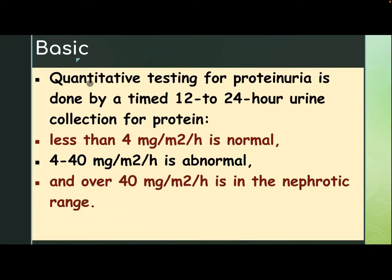Quantitative testing for proteinuria is done by timed 12 to 24 hour urine collection for protein. Less than 4 mg per cubic meter per hour is normal, 4 to 40 mg is abnormal, and over 40 is the nephrotic range.